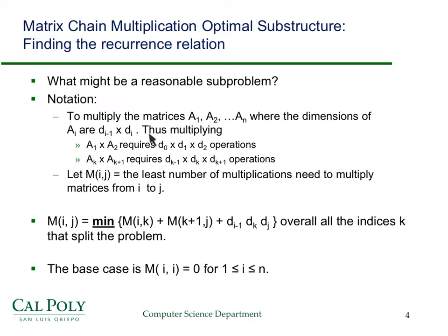We need some notation to make this clearer in the general sense. The dimensions of matrix Ai: A1, the first one, is going to be d0 times d1. Then for A2, because A2 has the same number of rows as A1 has columns, A2 will be d1 times d2, etc. So A1 times A2 is going to require d0 times d1 times d2 operations. And in general, Ak times A(k+1) is going to require d(k-1) times dk times d(k+1).